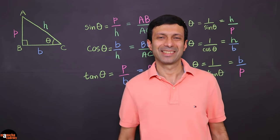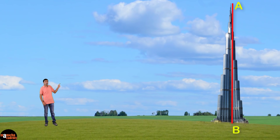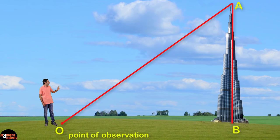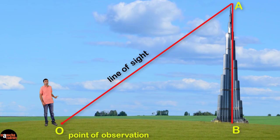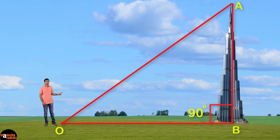Let's see how we can use these trigonometrical ratios to find heights and distances without actually measuring them. Let's say we are standing in front of Burj Khalifa or any other building. Let's mark the building as AB. We are going to observe the top of the building A from a point of observation on the ground, O. If you join OA, this line is called the line of sight. Through O, draw a horizontal line OB, joining the point of observation to the base of the building B. The angle between the building and the ground is 90 degrees because the building is standing vertically.